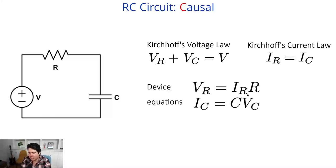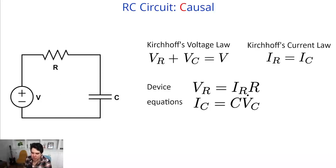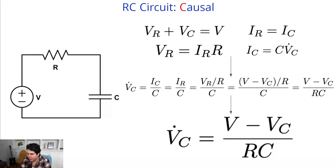To get this to a simulatable model takes some work in the causal case. This is a standard homework problem in mechanical or electrical engineering: take the RC circuit and build a causal modeling diagram. We have our four equations — Kirchhoff's laws and device equations — and we want to find the differential equation. We isolate our differential equation term by taking the capacitor current equation and dividing by capacitance. Since the two currents are equal, we substitute in. Then we use Ohm's law, isolate for V_R, and substitute.